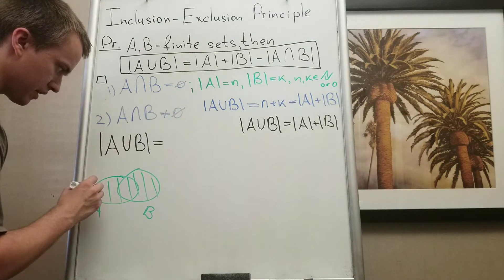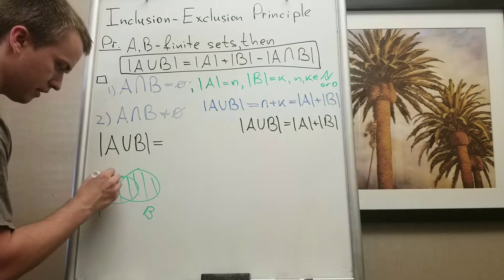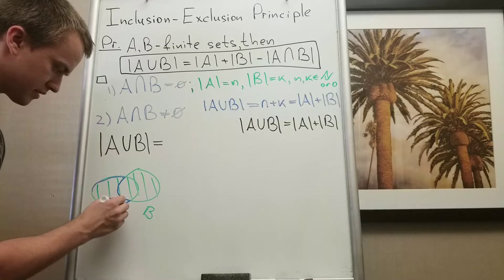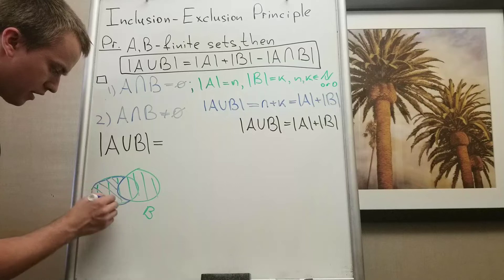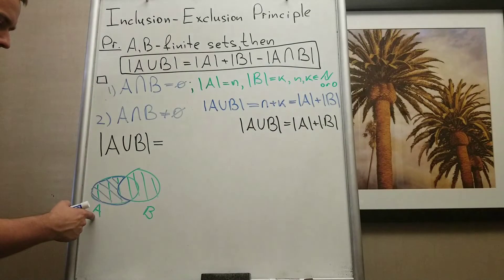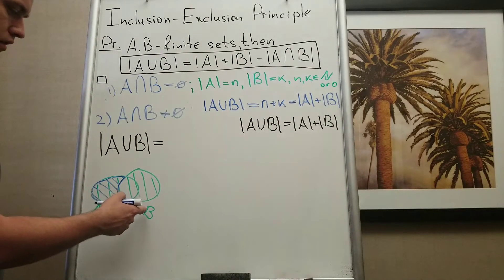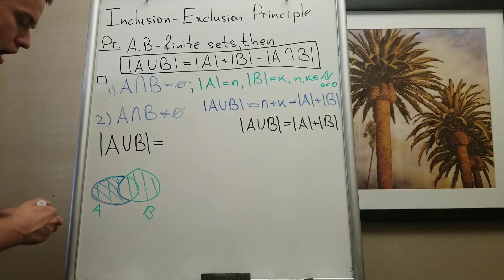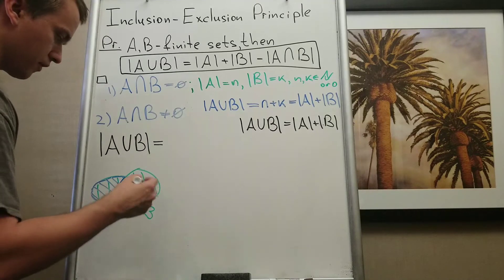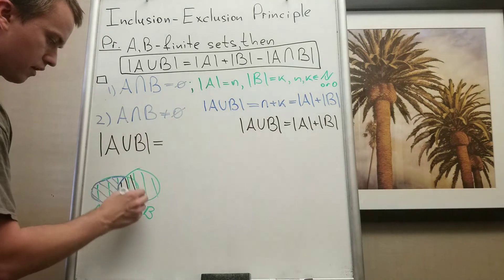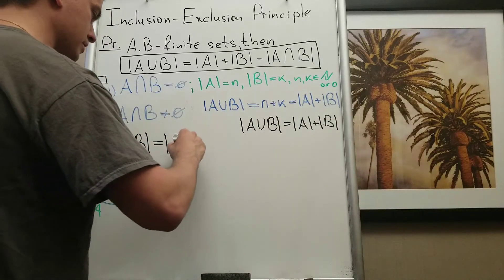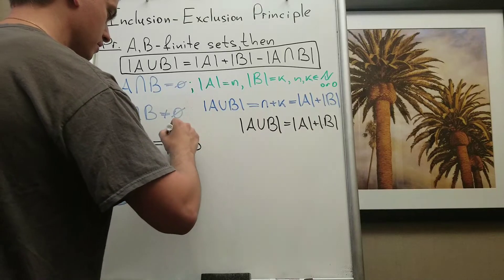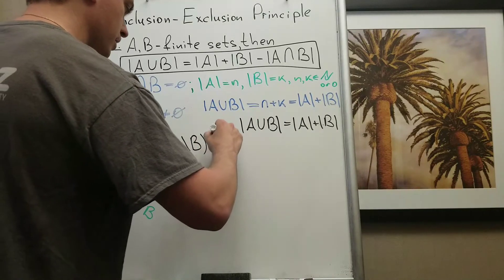I can write them as A minus B. And you can see that this set is going to be A minus B. Why? Because A minus B is basically all elements in A and no elements in B. And I will have A union B. So this cardinality I can rewrite as A minus B union B.